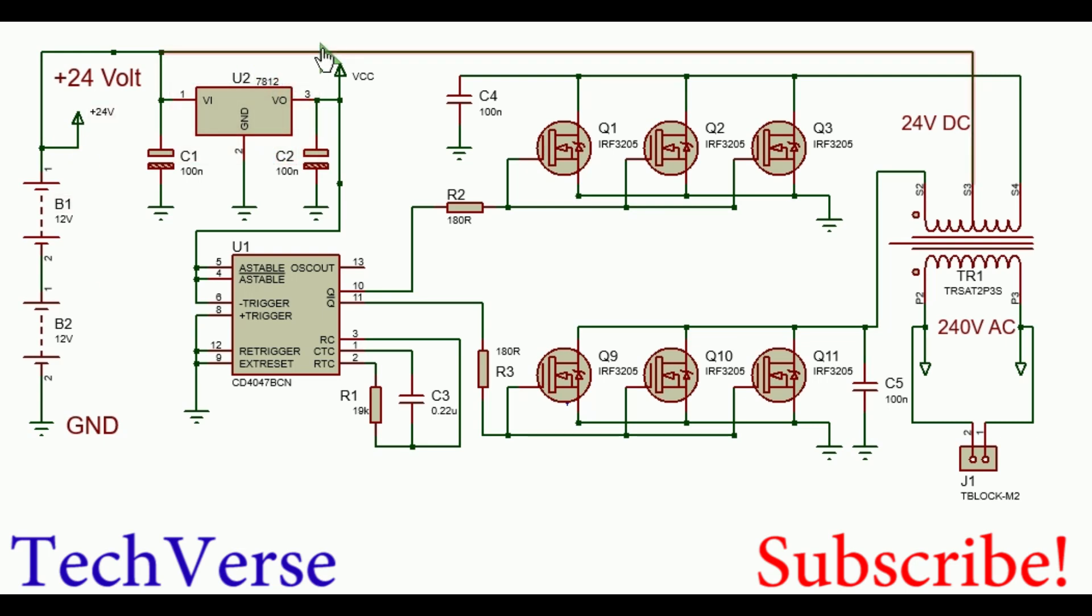The 7812 voltage regulator will work just fine to power the IC. All the connections are shown. Basically the IC acts as an unstable multivibrator. The oscillator output generates square wave output pulses.